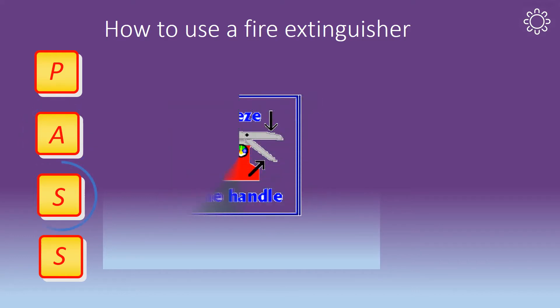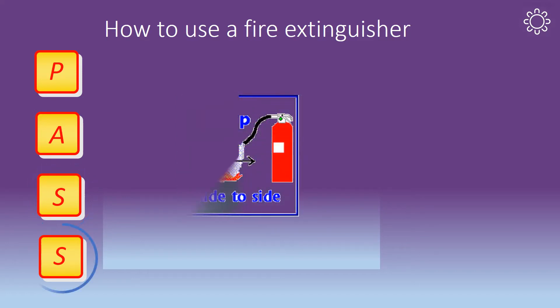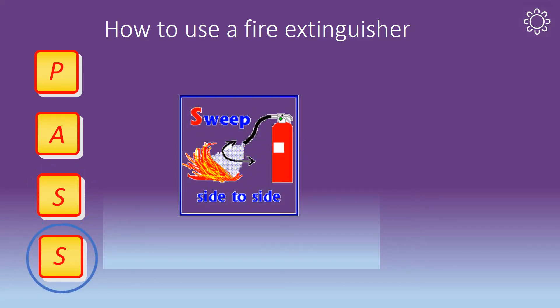Squeeze the trigger. Pressing the two handles together will release the pressurised extinguishing agent in the extinguisher. Sweep from side to side. Start using the extinguisher from a safe distance away and then slowly move forward. It is important to continue to sweep the fire until the fire is completely out. Once the fire is out, keep an eye on the area in case it reignites.